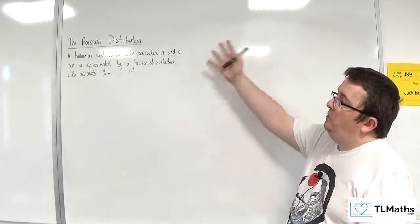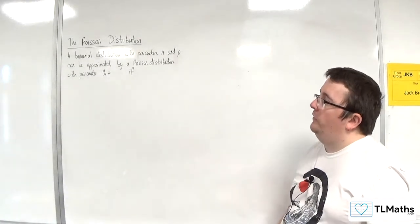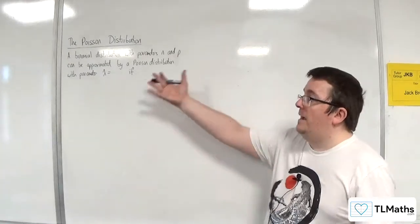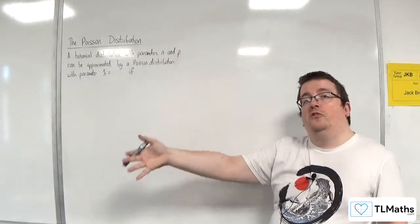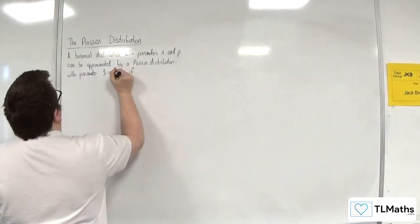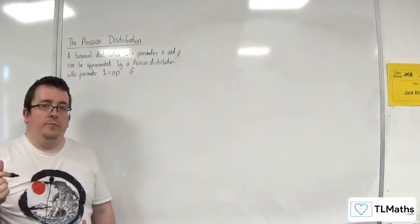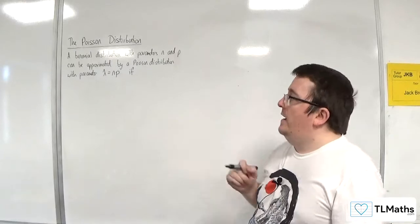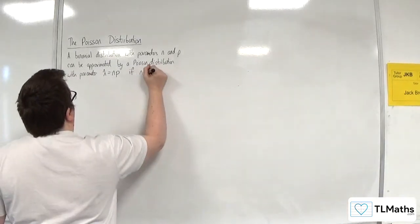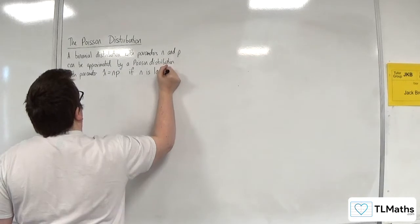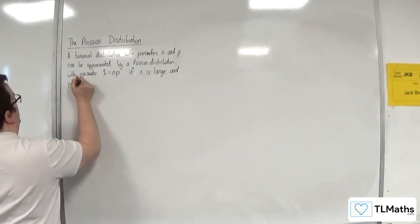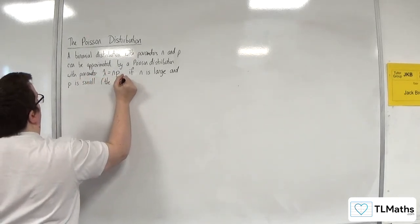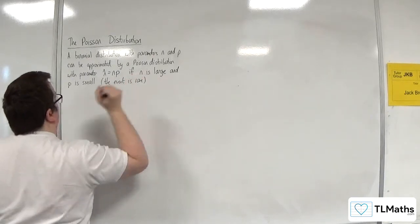A binomial distribution with parameters n and p can be approximated by a Poisson distribution with the parameter lambda, which is going to be equal to the mean. Because lambda is the mean of the Poisson, it must be equal to the mean of the binomial, which is n times p. But it comes with a bit of a caveat. And that is if n is large and p is small. So the event is rare if p is small.